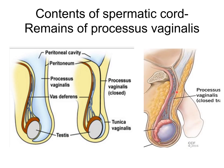The remnant of the processus vaginalis is another important content of the Spermatic Cord. As the testis descends from the abdominal cavity to the scrotum, a fold of peritoneum also descends in front of it — this is called the processus vaginalis. Later, the processus vaginalis gets closed and obliterated, but still remains as part of the content of the Spermatic Cord.